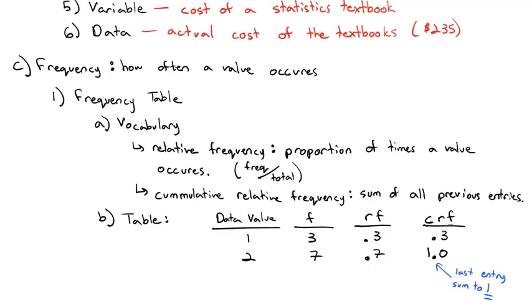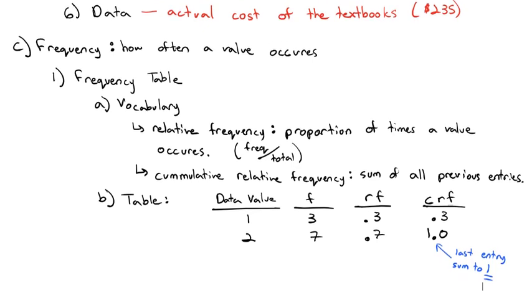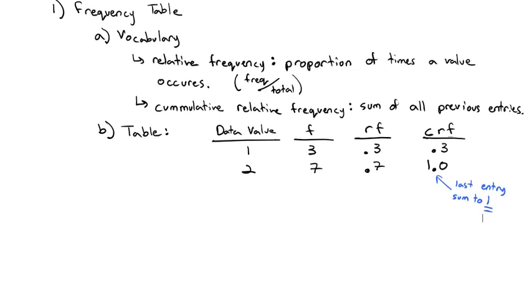Interesting to note is the last entry should sum to 1. Now, maybe if you have a round off error, it might be 1.00001 or 0.99999. That's OK. But generally speaking, we hope that cumulative relative frequency should sum to 1. That's all to show us how to set up the table. Let's actually make a frequency table. Let's do an example here.